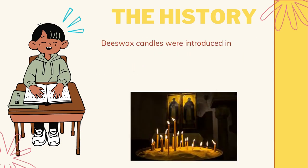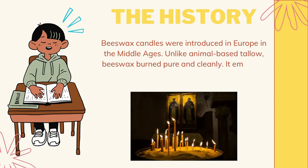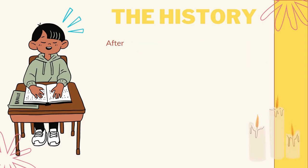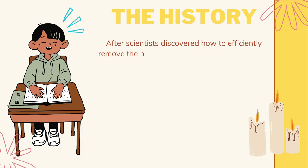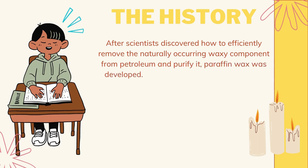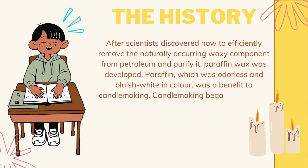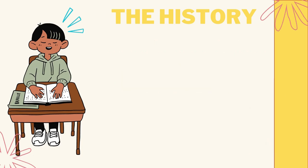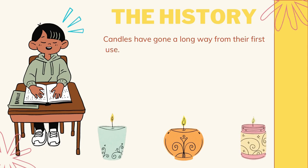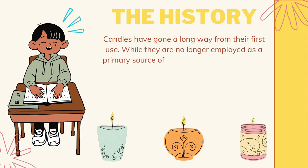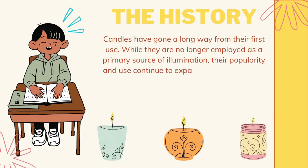Next, beeswax candles were introduced in Europe in the Middle Ages. Unlike animal-based tallow, beeswax burned pure and cleanly — it emitted a pleasant sweet smell rather than the acrid odor of tallow. After scientists discovered how to efficiently remove the naturally occurring waxy component from petroleum and purify it, paraffin wax was developed. Paraffin, which was odorless and bluish-white in color, was a benefit to candle making. Candle making began to fall after the invention of the light bulb in 1879. Candles have gone a long way from their first use, and while they are no longer employed as a primary source of illumination, their popularity and use continue to expand.